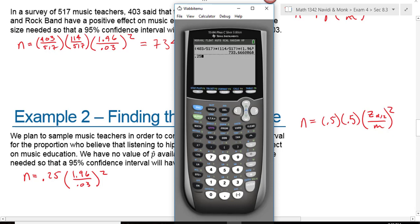0.25 times 1.96 divided by 0.03, close the parentheses and square. And what do I get for my sample size?